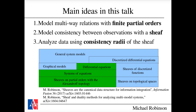Finite partial orders offer a happy medium between generality and practicality. Once you have your relationships between data elements established, the idea is to model the consistency between different observations using a sheaf — a mathematical object that specifies local data. Once you have data in hand and a sheaf model built, you analyze the quality of that data using something called the consistency radius.